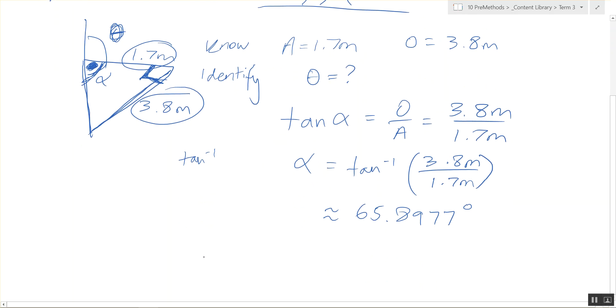We then put this into the calculator to find. Alright, so now let's find theta. Like I said before, theta is 180 degrees minus alpha. So, it's approximately equal to degrees to decimal places.